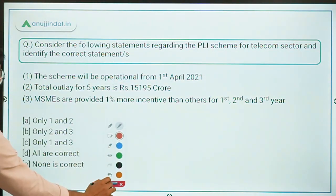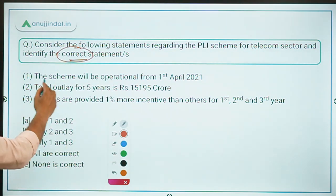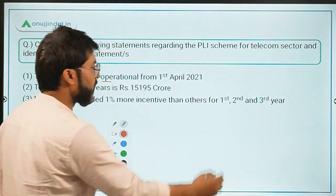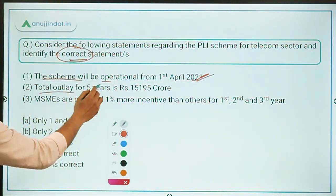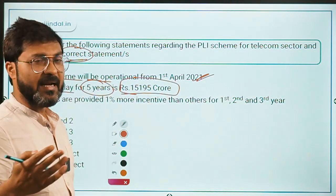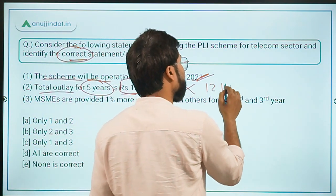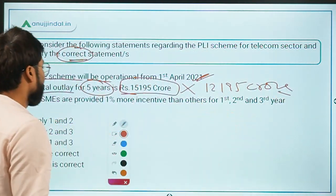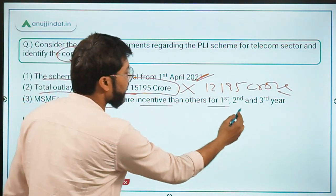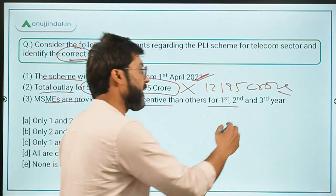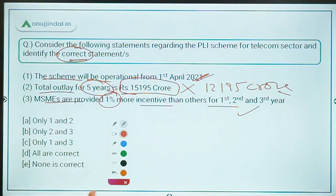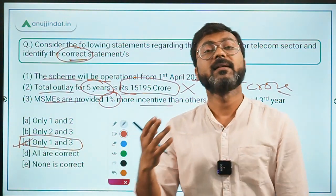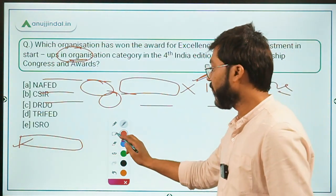Coming back to the question: Statement one — the scheme will be operational from 1st April 2021 — is correct. Statement two — total outlay is 15,195 crores — is incorrect; it is actually 12,195 crores. Statement three — MSMEs are provided 1% more incentive than others for the first, second, and third years — is correct. So statements one and three are correct, making option C the right answer.